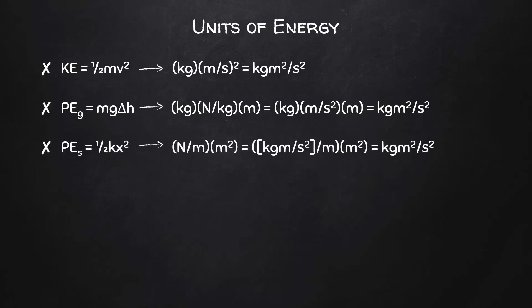For the spring potential energy, we would get newtons per meter times meters squared. A newton is a kilogram meter per second squared, which would then be divided by a meter, but then multiplied by a meter squared, and we would end up with kilogram meter squared per second squared. Since kilogram meter squared per second squared is quite a lot to say and to write, this combination of units has been defined as the joule, named for the 19th century English physicist James Prescott Joule, who studied the nature of heat, among other things.